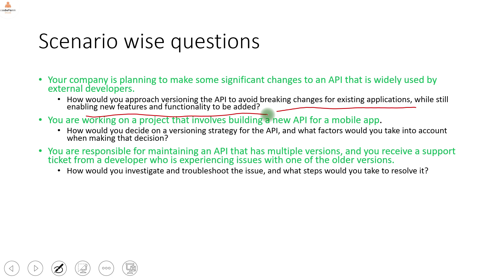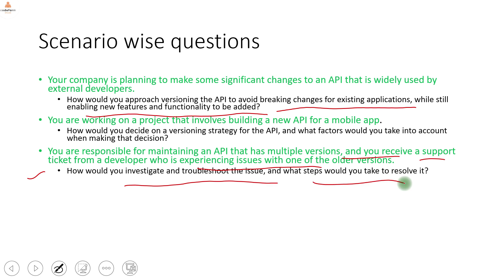You are responsible for maintaining an API with multiple versions and you receive a support ticket from a developer experiencing issues with an older version. How would you investigate and troubleshoot? First, go to the logs and monitoring applications to see how it is behaving and what data you have. From there you investigate what problem is occurring. Metrics, APM tools, and logs are what will help you troubleshoot the problem.